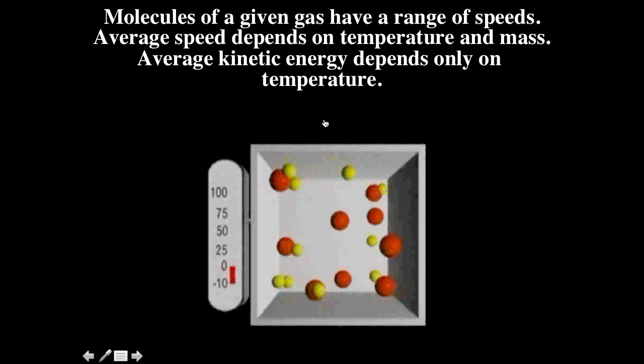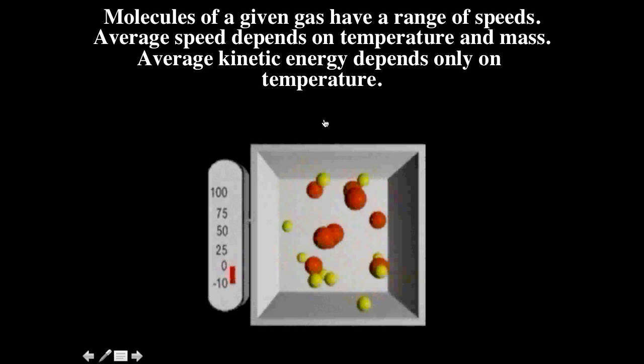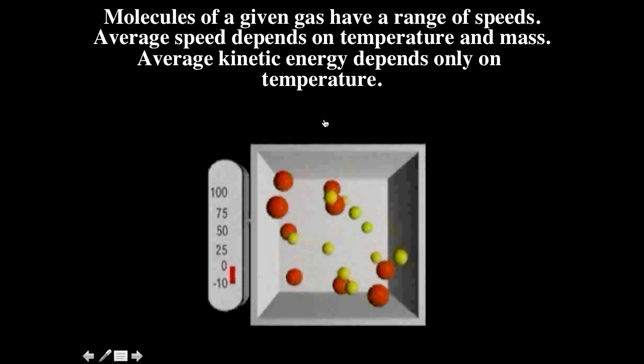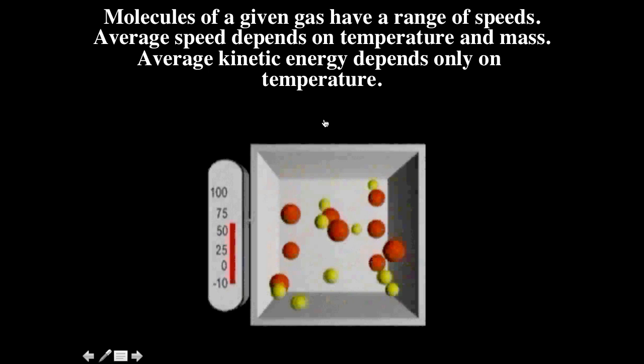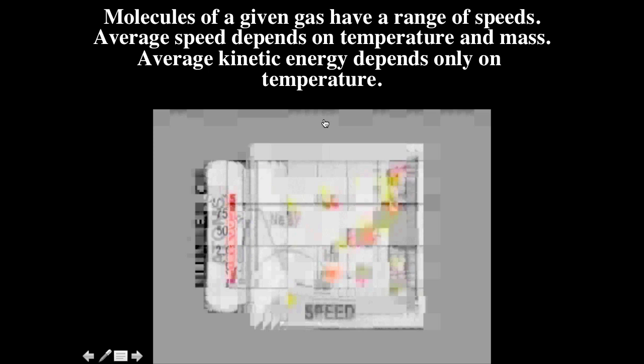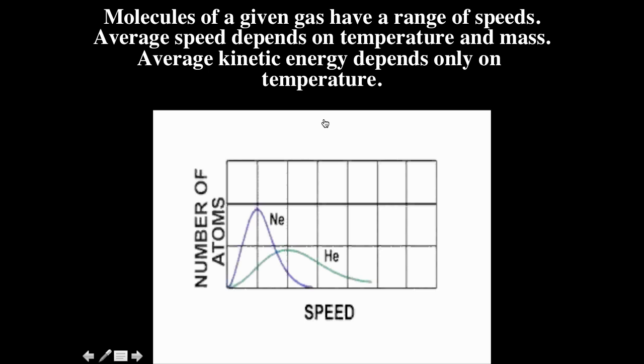Here we see a mixture of two gases with different molecular masses — helium and neon. The more massive neon atoms move more slowly, but they possess the same average kinetic energy as the helium atoms. At a given temperature, the distribution of molecular speeds for helium is much more spread toward high speeds than for neon. As the temperature increases, the average speeds of both helium and neon atoms increase, but at any given temperature, their average kinetic energies are the same.